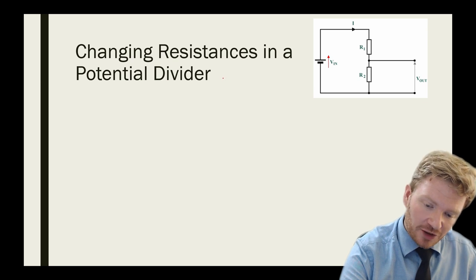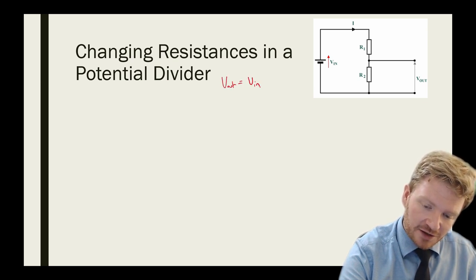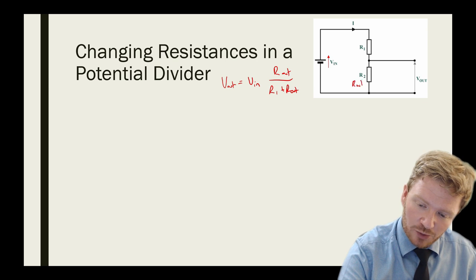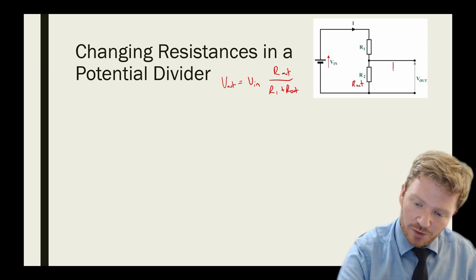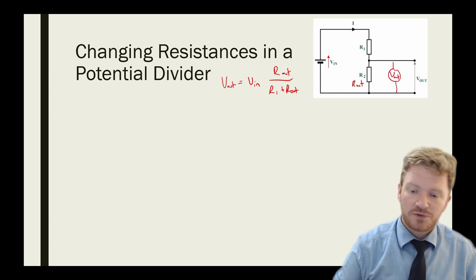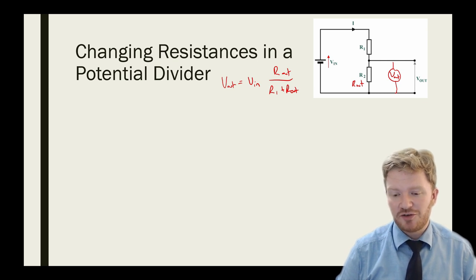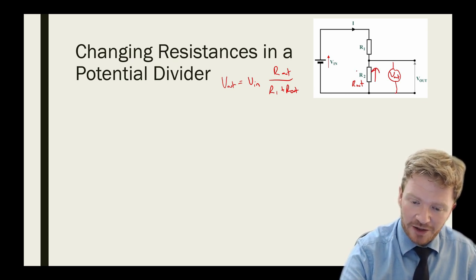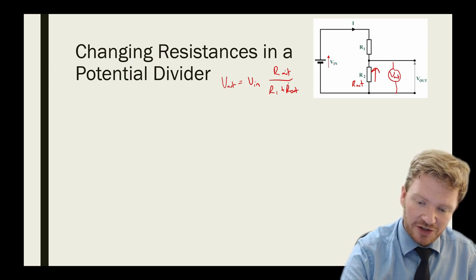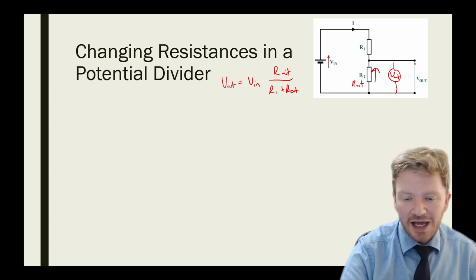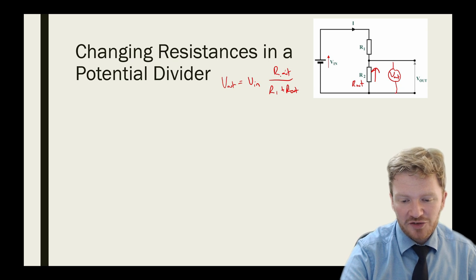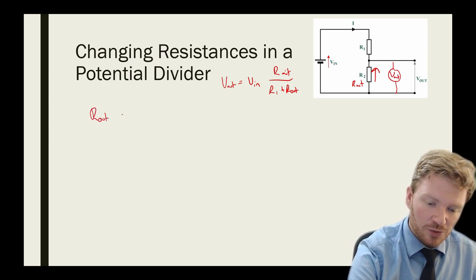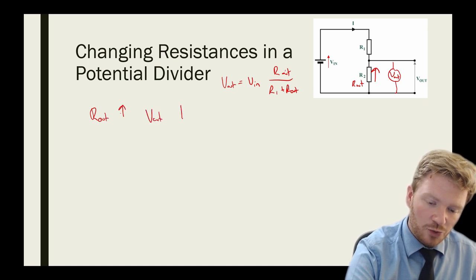Here's the cool bit. I've just worked out that V out is equal to V in multiplied by R out or R2 over R1 plus R out. I'm going to call R2 R out just to make it really clear that it's the one that I'm measuring my output voltage from. So what happens if I change the resistance of these? Let's make R2 bigger. If R out or R2 gets bigger, then both the top and the bottom of this equation is going to get bigger. However, this top bit is by itself. So as R out increases, V out also increases.